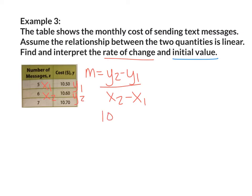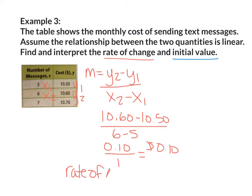So I have 10.60 minus 10.50. And then 6 minus 5. 10.60 minus 10.50 will give me 10 cents. 6 minus 5 is 1. 10 cents divided by 1 will still give me 10 cents. So my rate of change is 10 cents.